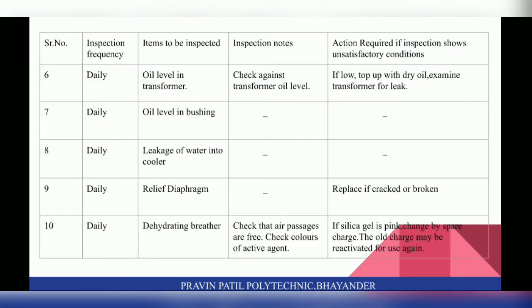On a daily basis, check the oil level in the transformer. If the level is low, top up with dry oil and examine the transformer for leakage. Also check oil level in the bushing, leakage of water into the cooler, and the relief diaphragm — if the diaphragm is cracked, replace it. Check the dehydrating breather: ensure air passages are free and check the colour of silica gel. If silica gel is pink, change it with a spare charge.